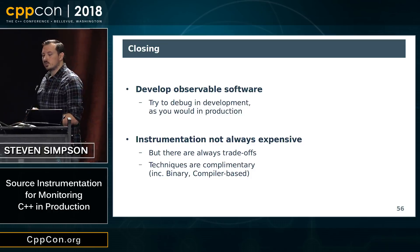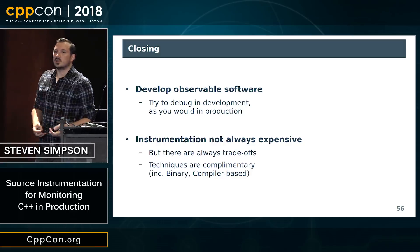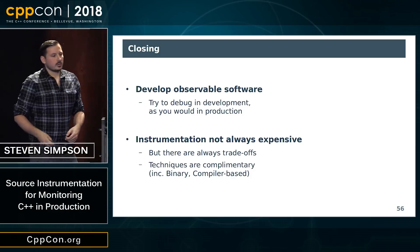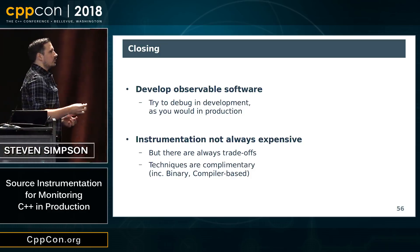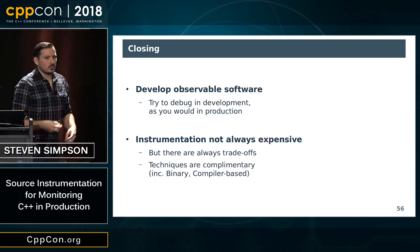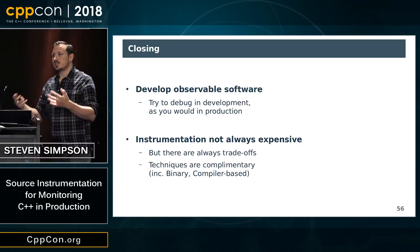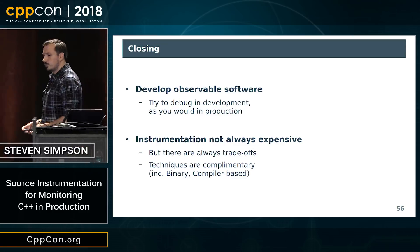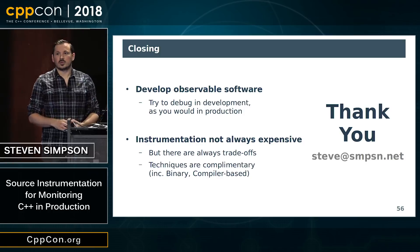There are always trade-offs, and the techniques here are very complementary — you use them together. This includes other types of instrumentation: just because you're adding source instrumentation to your code doesn't mean you can't still use your debugger or tools like strace, or have the compiler add instrumentation as well. With source instrumentation, you can choose what information to expose that is useful to your particular domain — whether that's counting frames processed in a video framework or the number of times a table is accessed in a database. With that, I'm going to thank you for coming, and I hope you enjoy the rest of your conference.